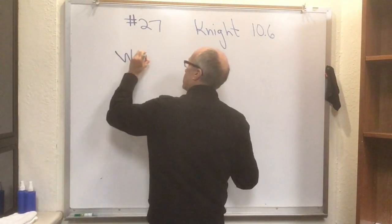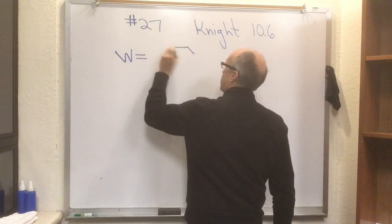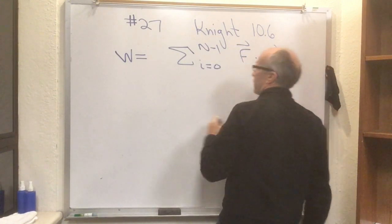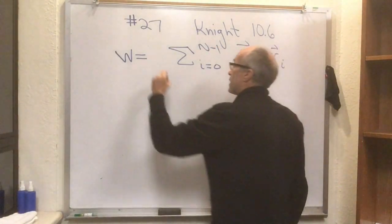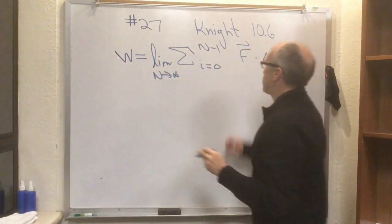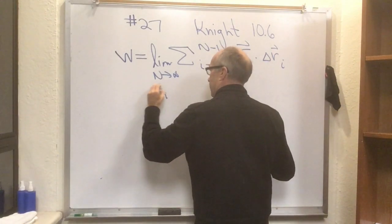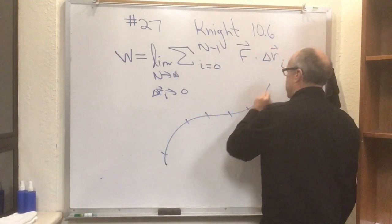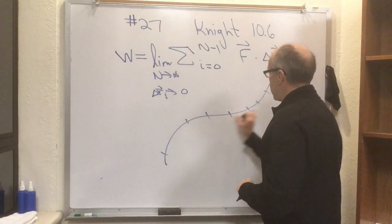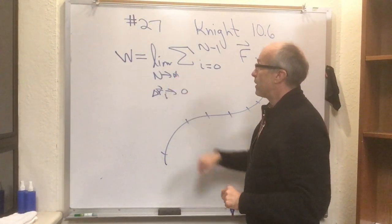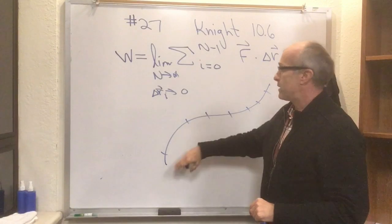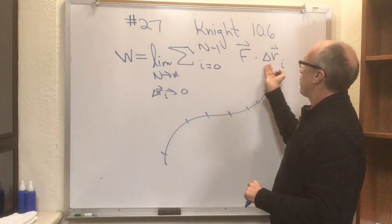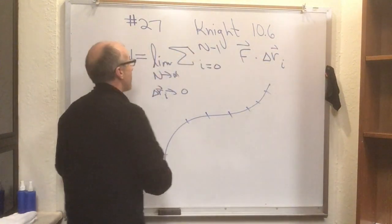The work is defined to be the sum from i equals zero to n minus one of F dot delta-r sub i, and you're supposed to understand this in the limit that n goes to infinity — that is, the limit that all the little delta-r's get extremely small. You make the path, chop it up into pieces, calculate F dot delta-r for each piece, chop it into finer pieces, recalculate, and take the limit that n goes to infinity, summing up all those infinitely many F dot delta-r's. That's the actual exact formula for the work.